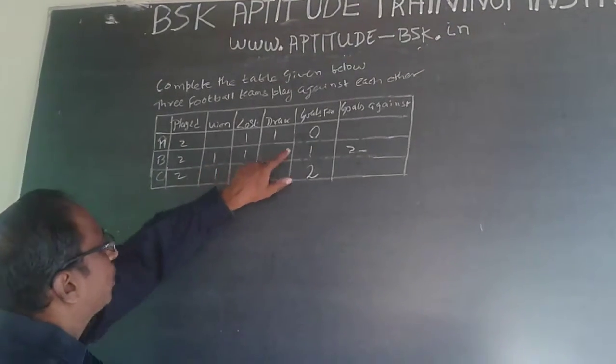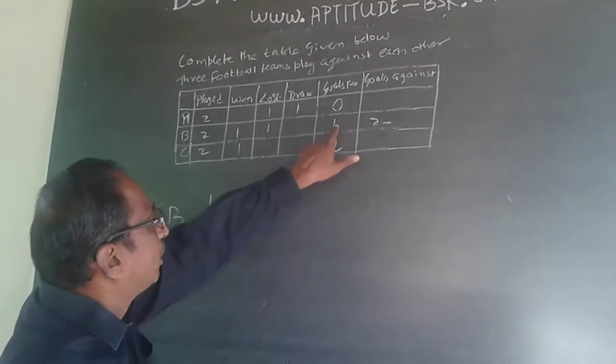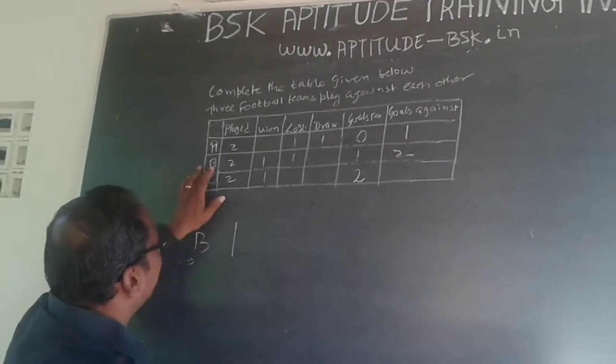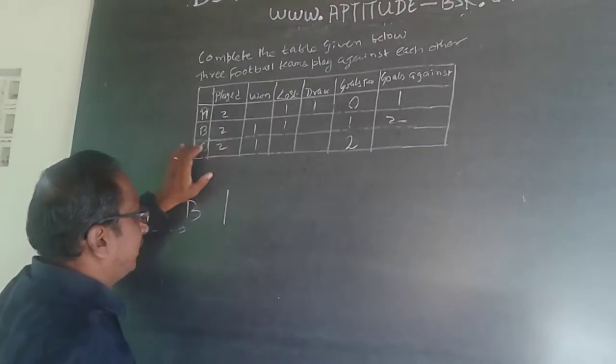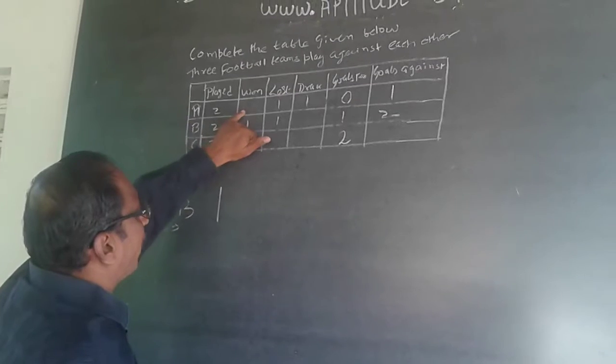With this one goal, B has won one game. So B cannot score this goal against C. This goal has been scored against A. So B has won against A and lost against C.